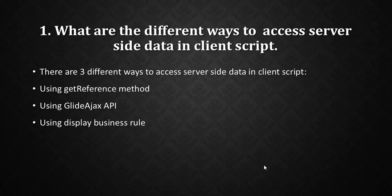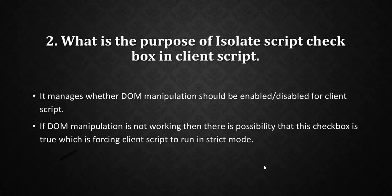The first question is: what are the different ways to access server-side data in a client script? There are three ways — first, using the getReference method; second, using the GlideAjax API; and third, using the display business rule. If asked which one you prefer, say GlideAjax API, because it is more performance-efficient.